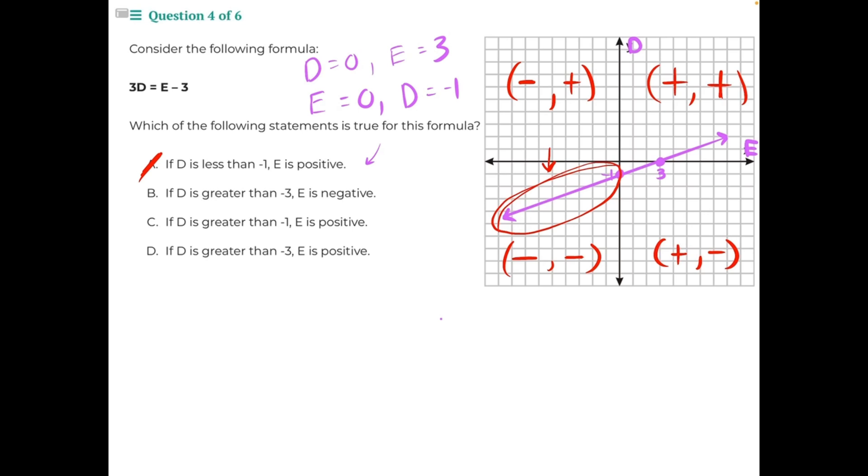B and D both say if d is greater than negative 3, then e is either positive or negative. And negative 3 is not one of our intercepts, so that makes B and D also incorrect.